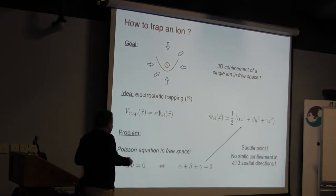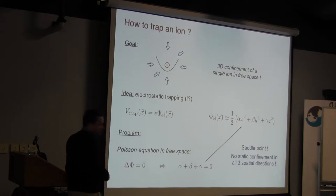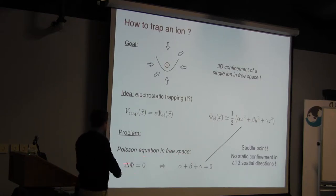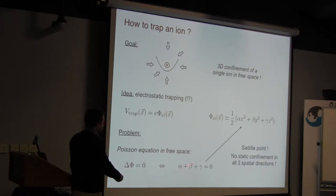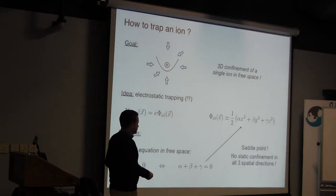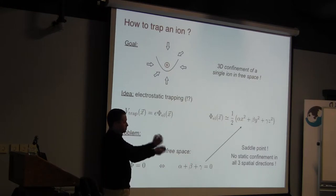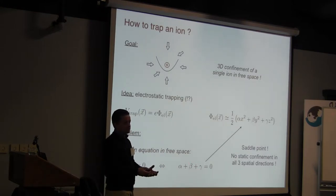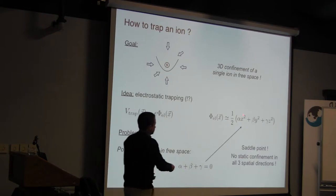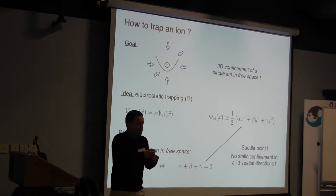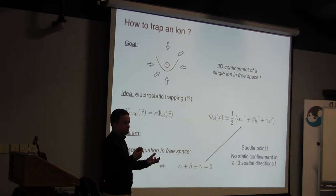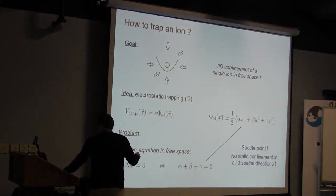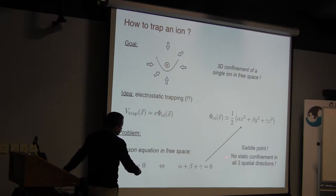The reason is simply the Poisson equation. In free space, the Laplacian of the potential phi is zero, which means these coefficients alpha, beta, and gamma must add up to zero. So even if you have attractive confinement in two directions, one of these coefficients must be negative — at most you get a saddle point. This is well known: there is no static electric field configuration which can hold an ion in free space.